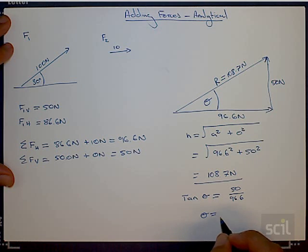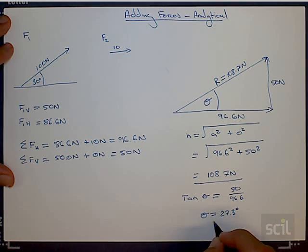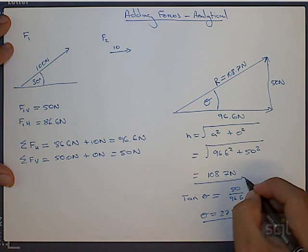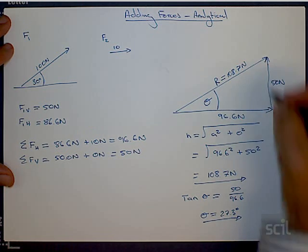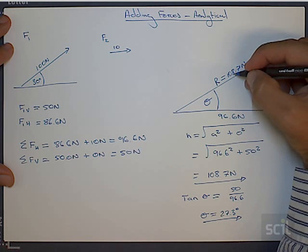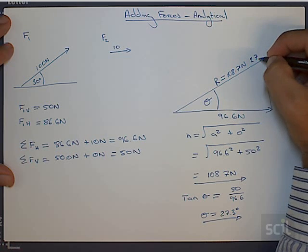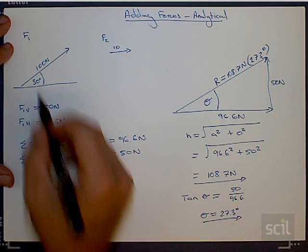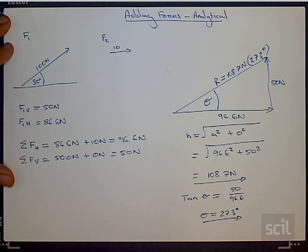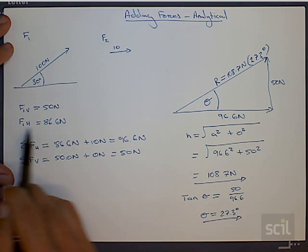Tan of that angle is equal to opposite over adjacent, 50 divided by 96.6, and therefore the angle is equal to 27.3 degrees. Again, a little bit of calculator work and that'll help you figure out exactly what that angle is. So this is giving us a resultant force of 108.7 Newtons at an angle of 27.3 degrees, and that is the resultant of adding force 1 with force 2. And we did this by summing their vertical and their horizontal components.